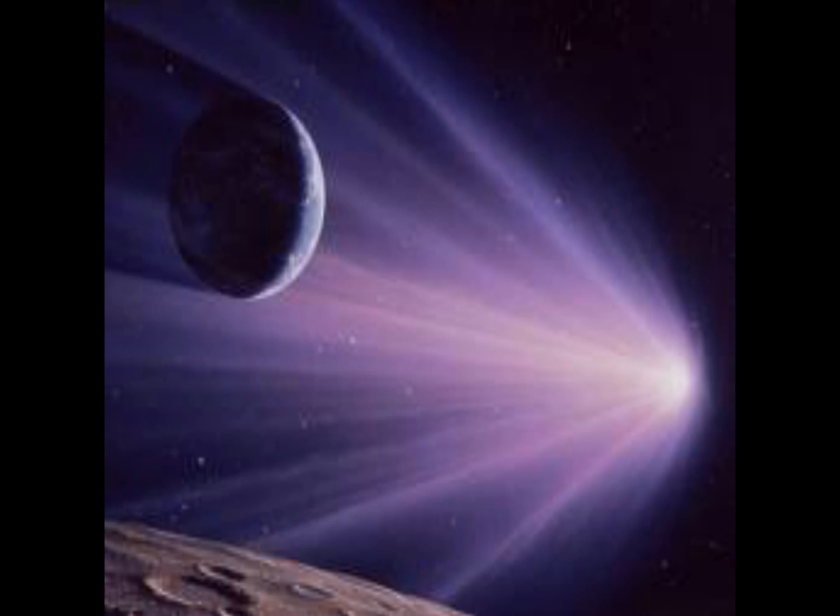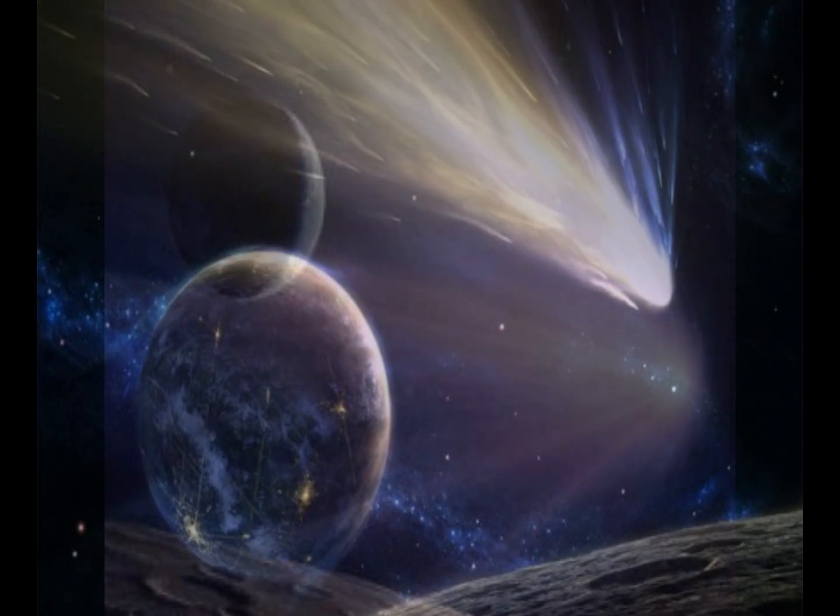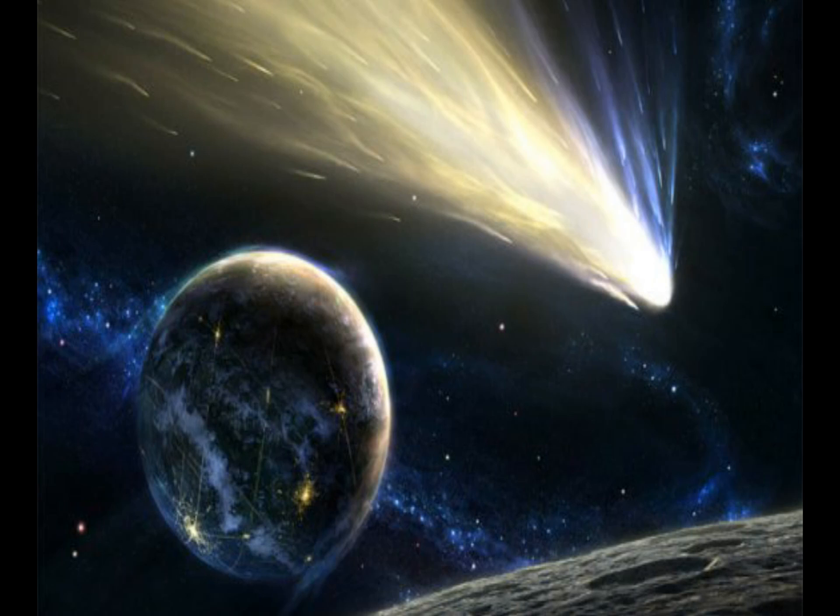Nibiru is the name of a hypothetical 12th planet, proposed by the now-dead Zachariah Sitchin, who created his own translations of Sumerian tablets in order to come up with this. The idea has been heavily adopted by the 2012 crowd, which is why I'll be talking about it more extensively in a future episode.